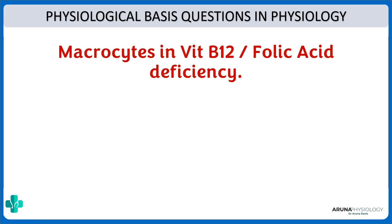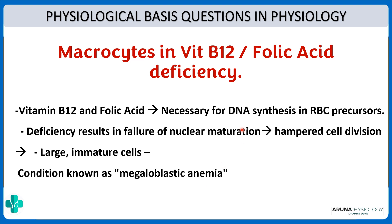A physiological basis question: why are there macrocytes in vitamin B12 or folic acid deficiency? Vitamin B12 is necessary for DNA synthesis in RBC precursors. If there is a deficiency, there will be failure of nuclear maturation, which in turn hampers cell division. It is by mitosis that the cell size decreases, so when mitosis is hampered, this leads to formation of large immature cells called megaloblasts. That is why the deficiency is called megaloblastic anemia.